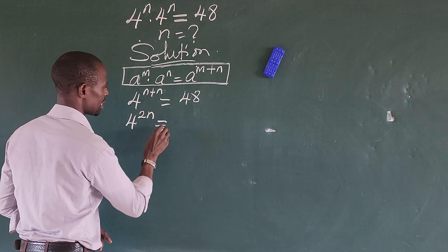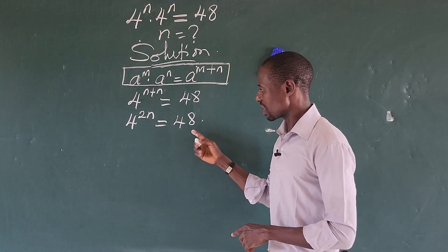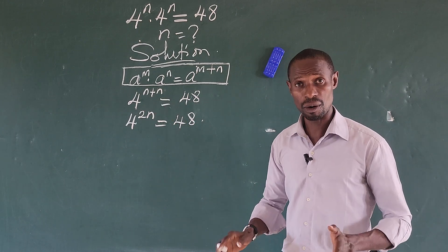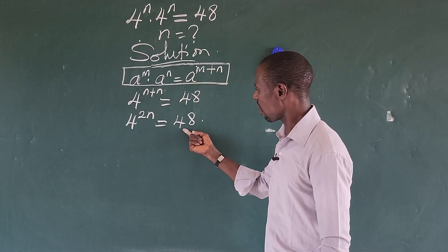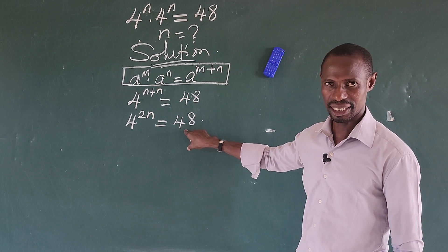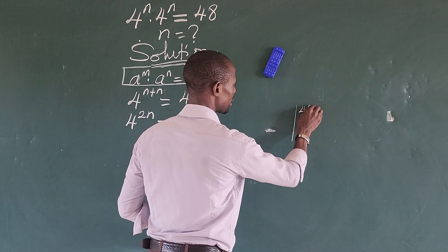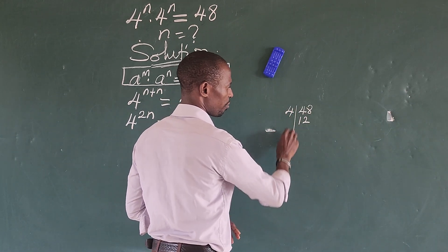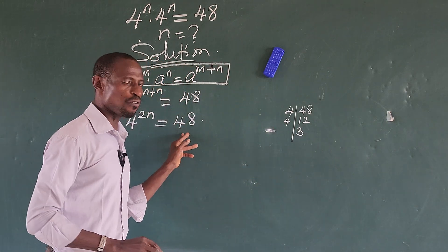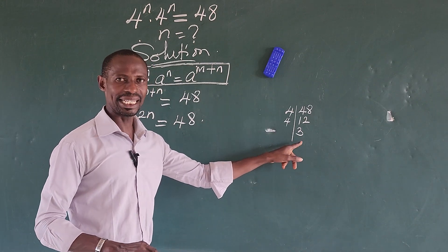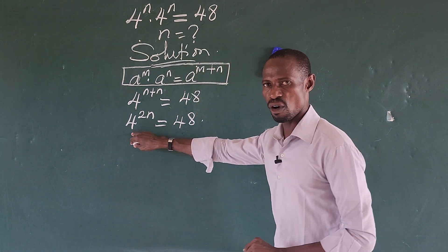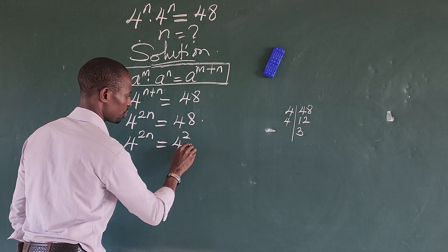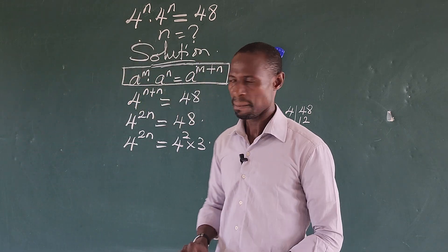Now, can we express 48 in base 4 directly? No, we cannot. So what we do is simplify 48. Dividing 48 by 4 gives us 4 times 12, then 4 times 3, so we can write 48 as 4 times 4 times 3, which is 4 squared times 3. So we rewrite the equation as 4 to the power of 2n equals 4 to the power of 2 times 3.